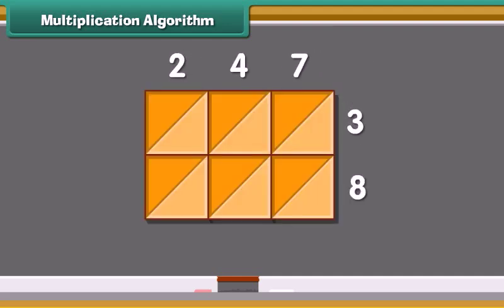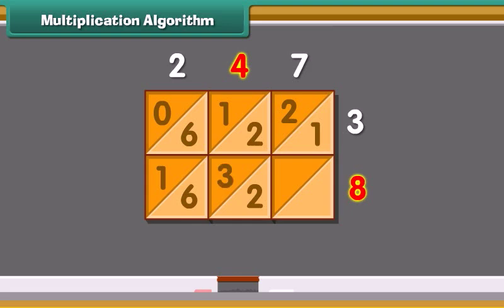Now, we will multiply 247 and 38 by lattice algorithm. We will multiply the numbers one by one and write answers in this box. Write 10's in 10's box and 1's in 1's box. Firstly, multiply 2 and 3. Answer is 6. Write 1's in lower box and 10's in upper box. Then, multiply 4 by 3. 4 3's are 12. Write answer in the box. Now, 7 3's are 21. Similarly, 8 2's are 16. 8 4's are 32. And 8 7's are 56.